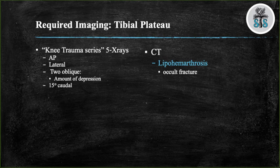CT scans are able to define the fracture better than an x-ray and determine the amount of depression. CT scans have been shown to change operative planning 60% of the time. Your CT scan must be 2 mm cuts for optimal sensitivity and specificity. CT scans can also detect lipohemarthrosis — a collection of fat and fluid within the joint — which can indicate an occult fracture. On CT you will see three layers: the top fat layer, middle serous fluid, and bottom cellular blood components. If you aspirate a knee and see fat globules, that may indicate an occult fracture.